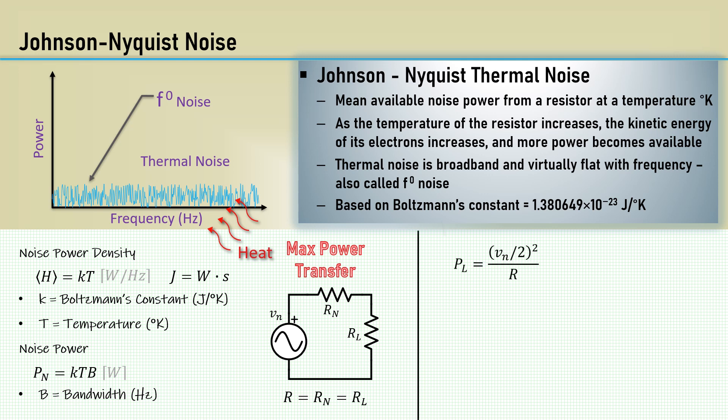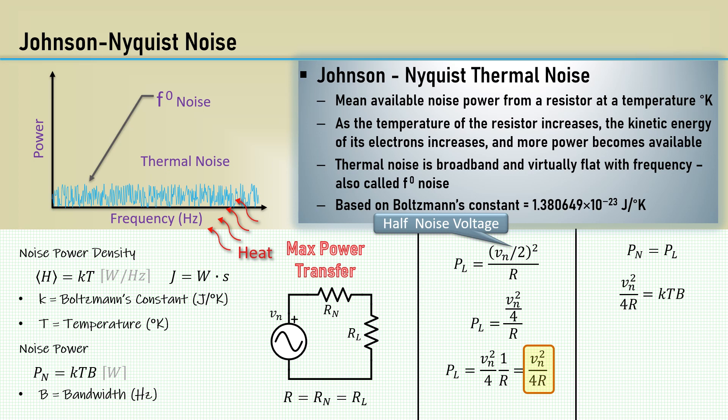The power in the load is half the noise voltage squared over R. Manipulating that gives us Vn squared over 4R. The power in the noise resistor equals the power in the load, so we can set the result equal to KTB. Then solving for Vn equals the square root of 4KTRB. Now you know where the 4 came from.